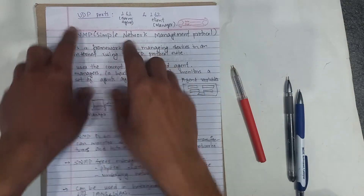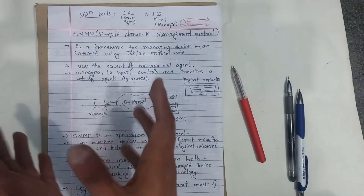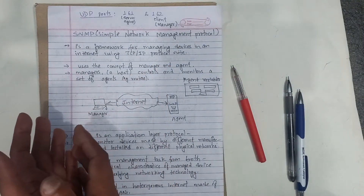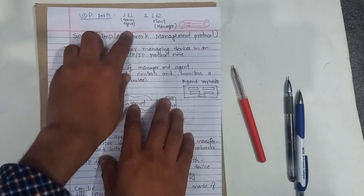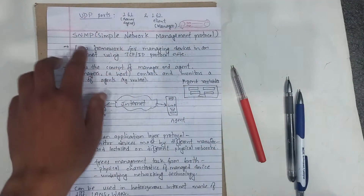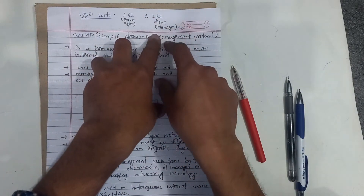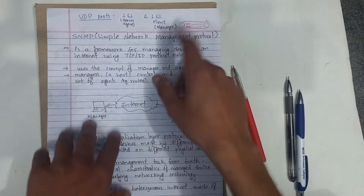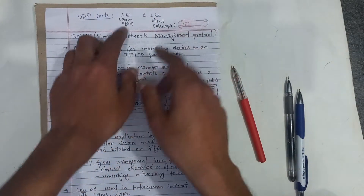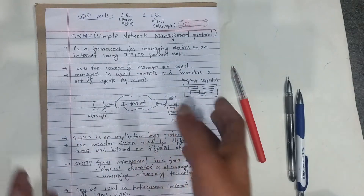First, UDP ports are used. Port 161 is for the server or agent, and port 162 is for the client or manager.